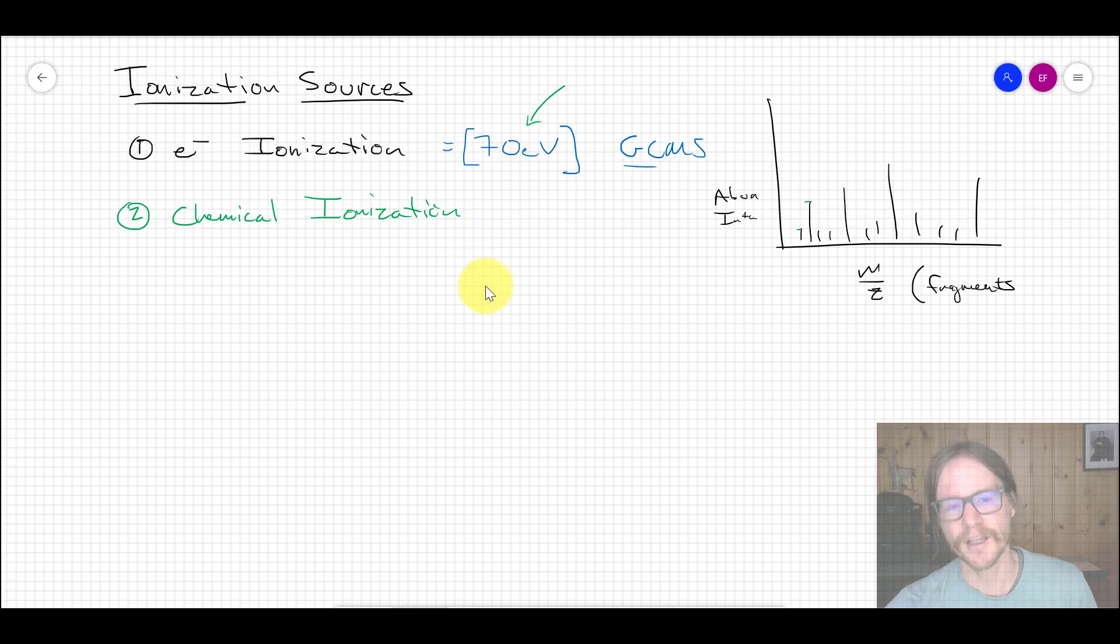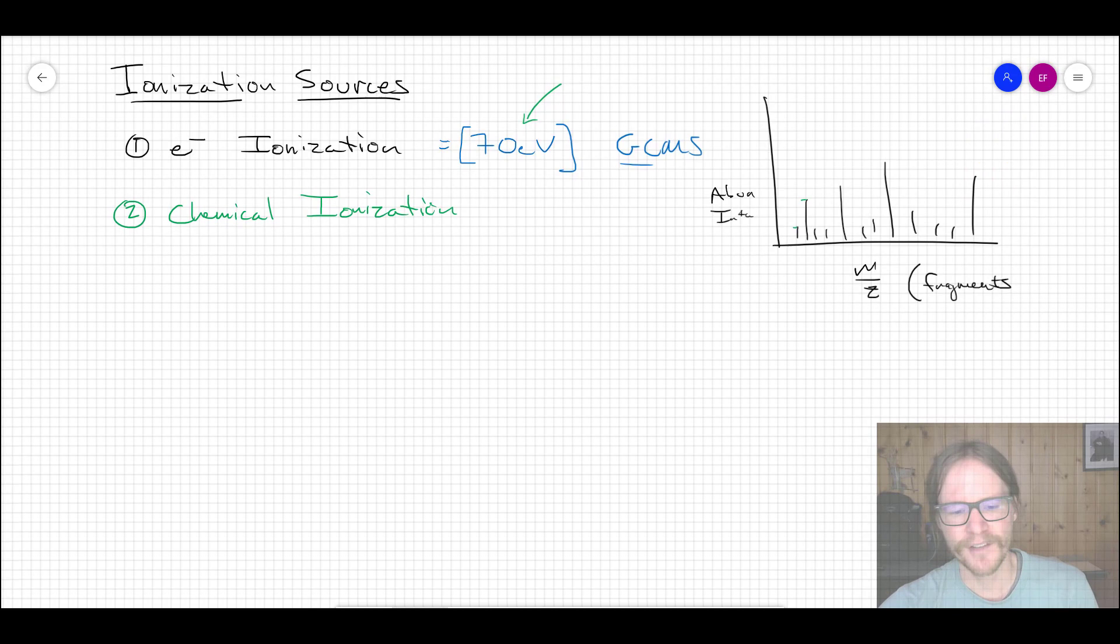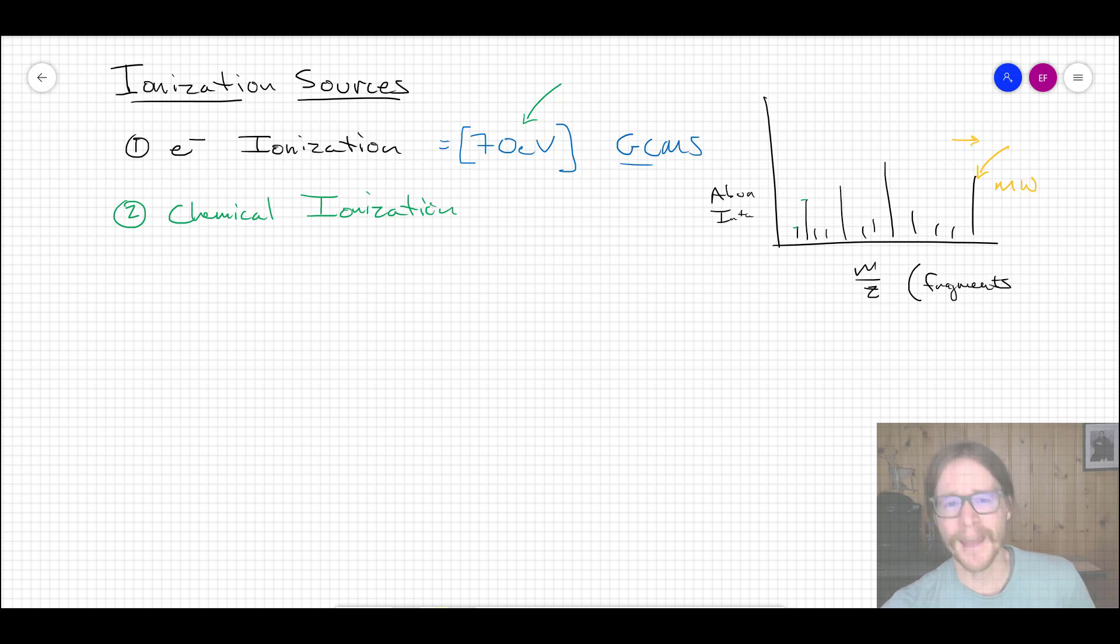The problem with that is normally in the interpretation of a mass spectrum like this, usually the heaviest peak out here is the same mass as the molecular weight of our compound, whatever that peak is furthest out. And that makes sense. If you put a molecule in there and you break it apart, the heaviest thing that you can weigh of that broken apart thing is the original molecule, meaning it didn't break apart.